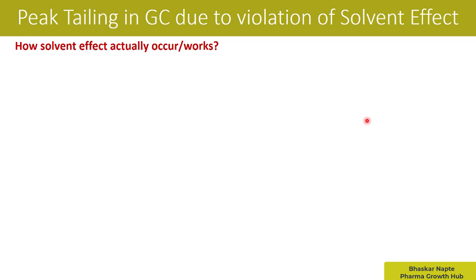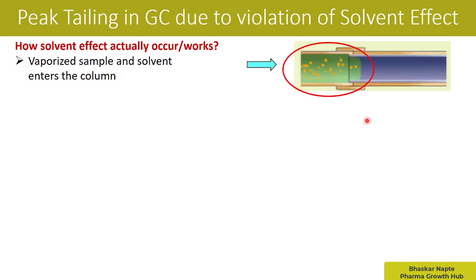How does the solvent effect actually work? This part is very important. The vaporized sample and solvent enter the column — during injection, the injector port has a high temperature to convert the sample from solution to a vaporized form. This vaporized form of the entire sample goes into the column. In the diagram on the right, the green portion is the sample solvent in vapor form, and the brown spots are the vaporized analytes — they are just entering the column.